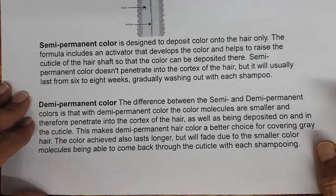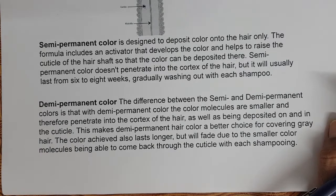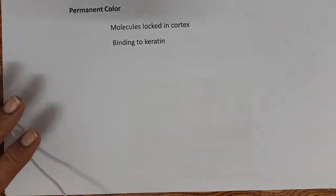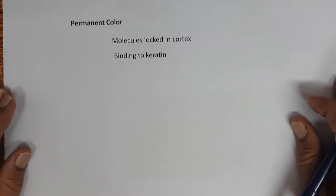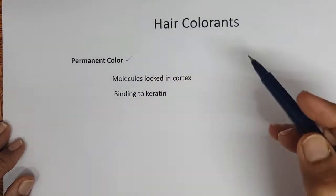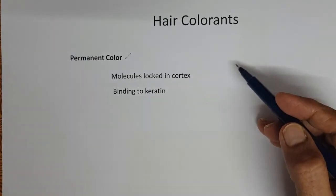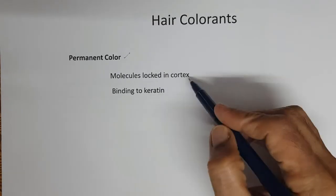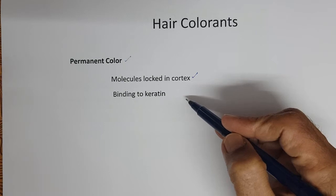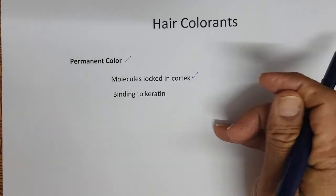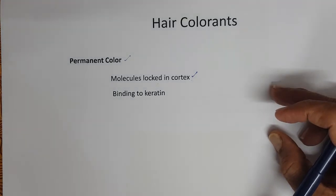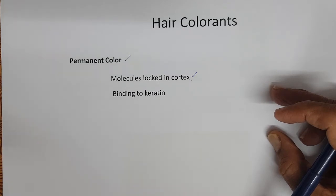So what are the types of hair colorants? Temporary, semi-permanent, demi-permanent, and permanent. What we will be seeing more is the permanent hair color. Permanent color — two approaches. First: molecules locked in cortex. Smaller molecules penetrate inside the cortex, a chemical reaction happens inside the cortex, the molecules become bigger and get locked inside — they can't come out.